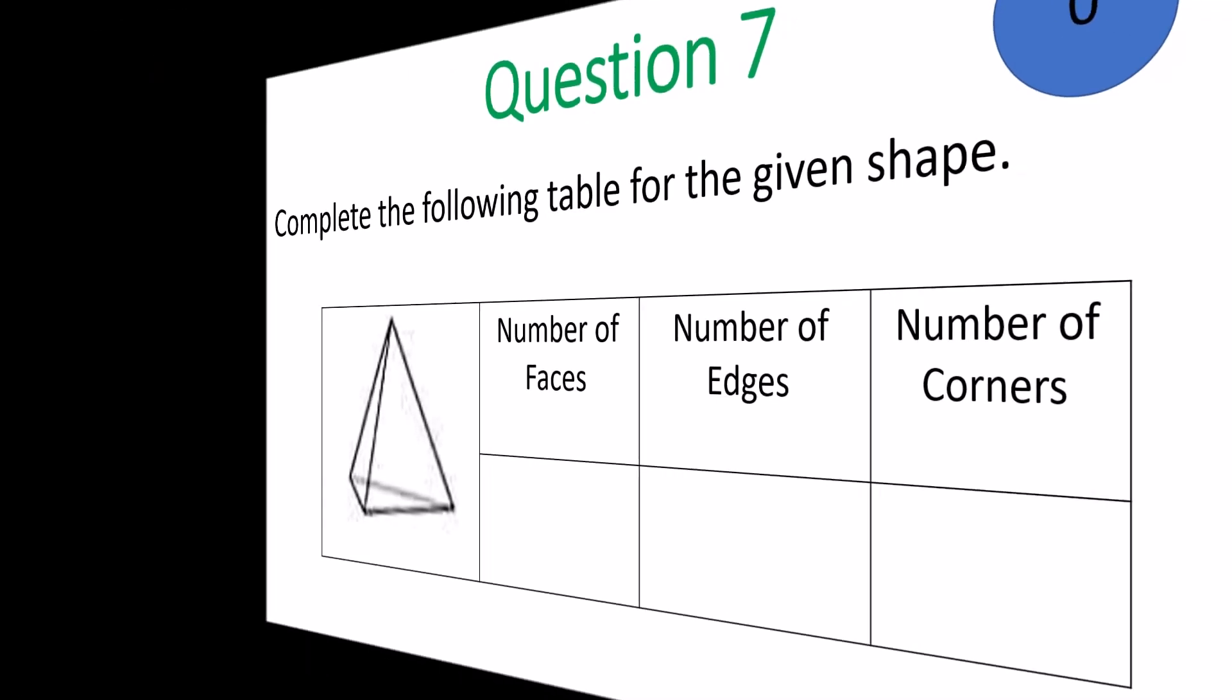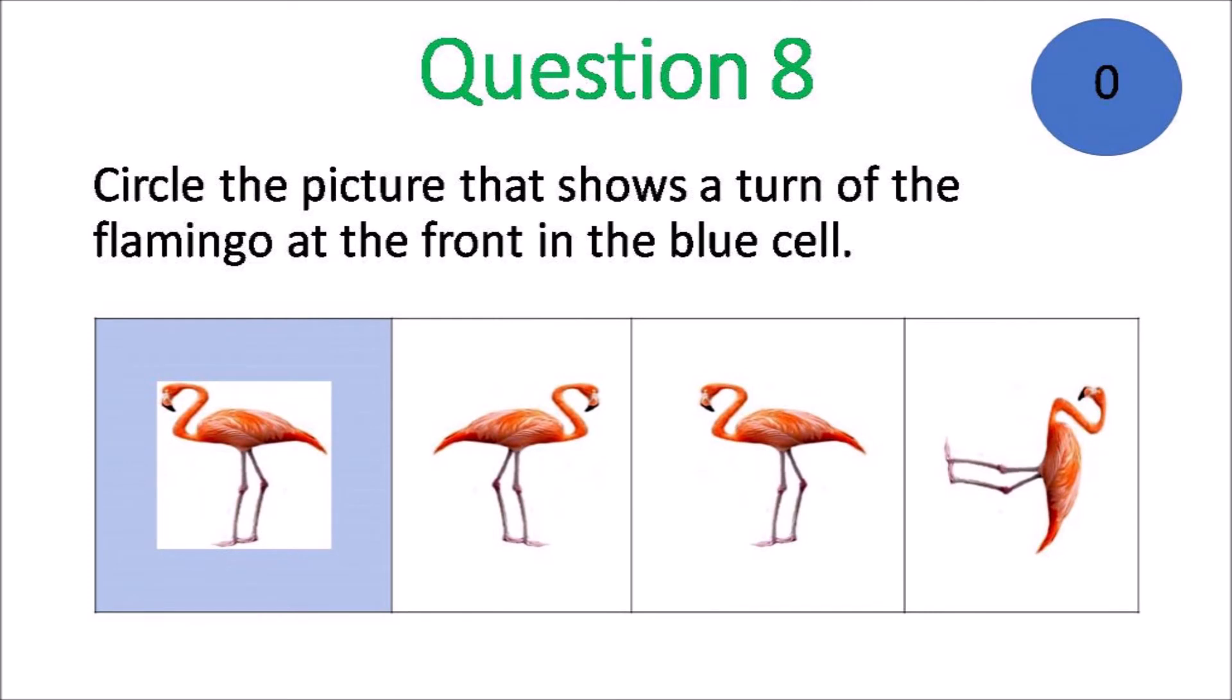Question number 8. Circle the picture that shows the turn of the flamingo at the front in the blue cell.